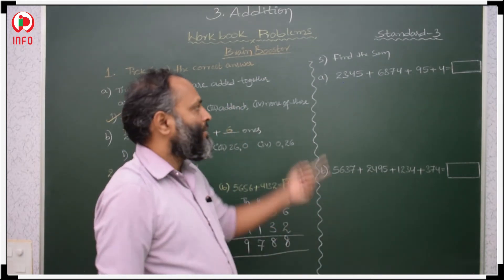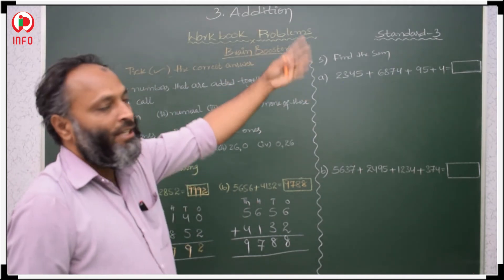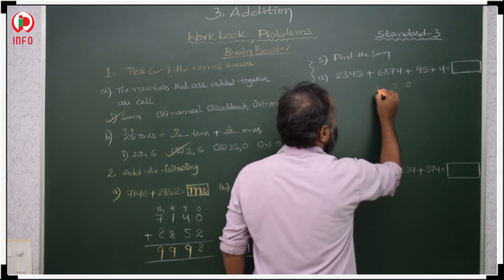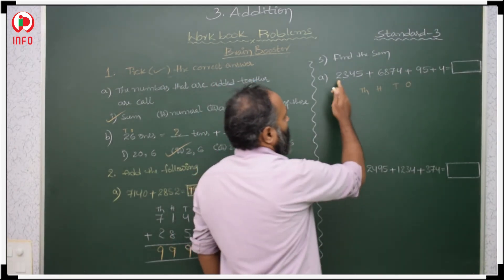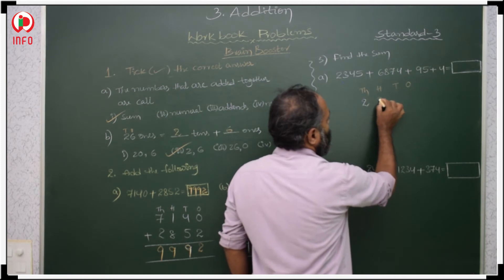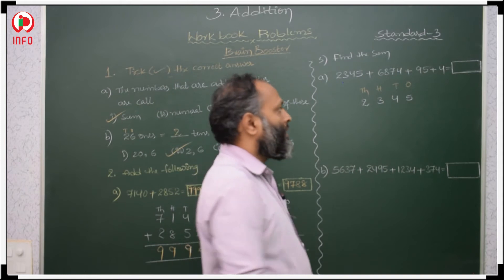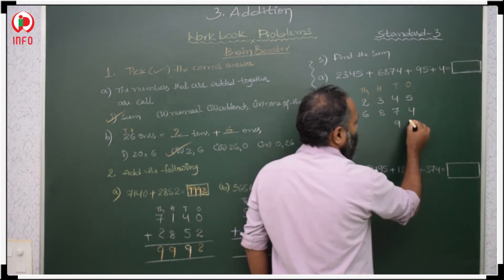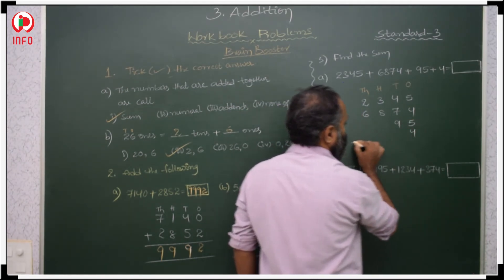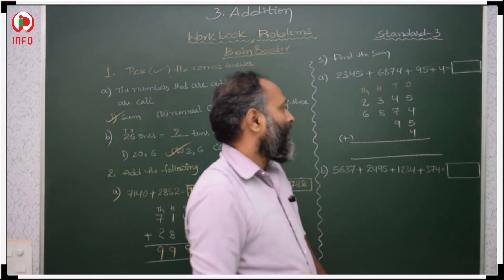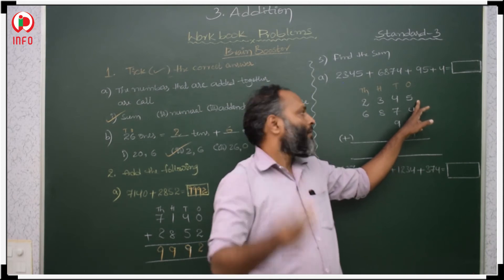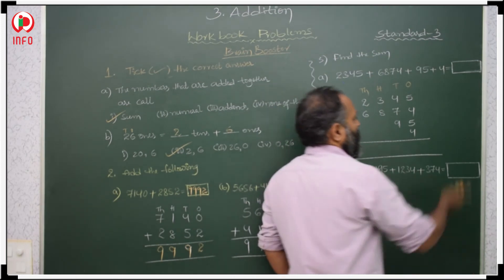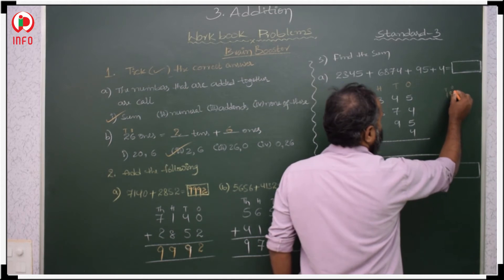Next: find the sum with 4-digit, 3-digit, and 2-digit mixed numbers — 2345, 6874, 95, and a single digit. Writing in columns: 1's, 10's, 100's, 1000's. Adding 1's: 5 plus 4 plus 5 plus 4 is 18 — 8 in 1's place, carry 1 to 10's.